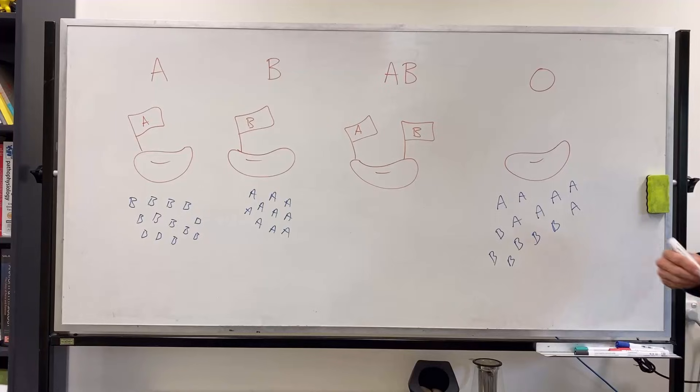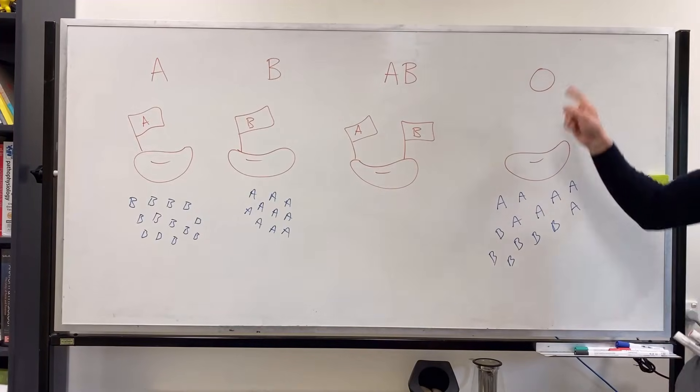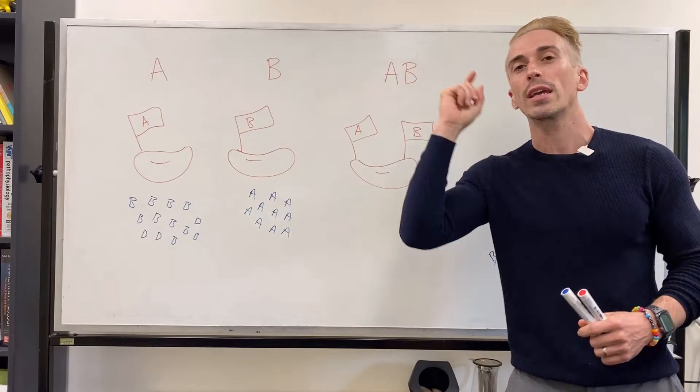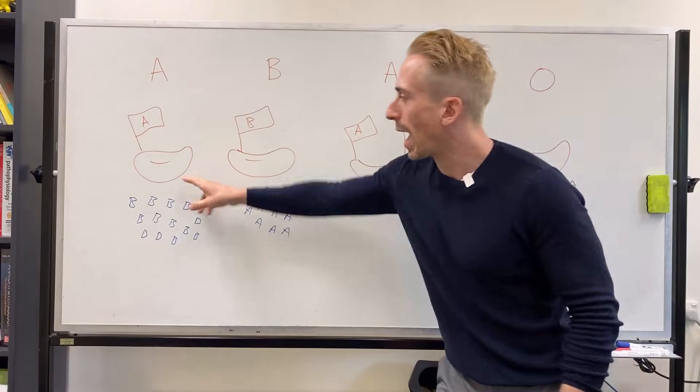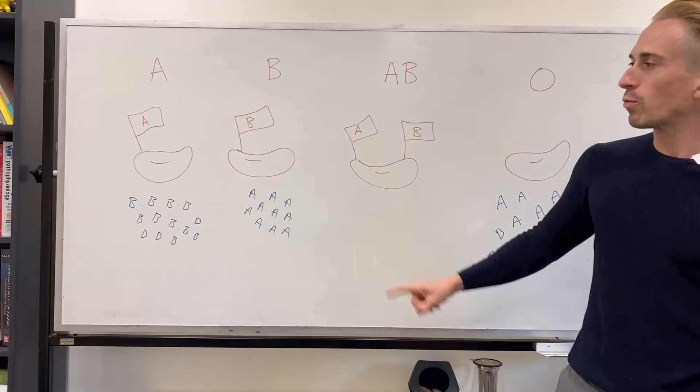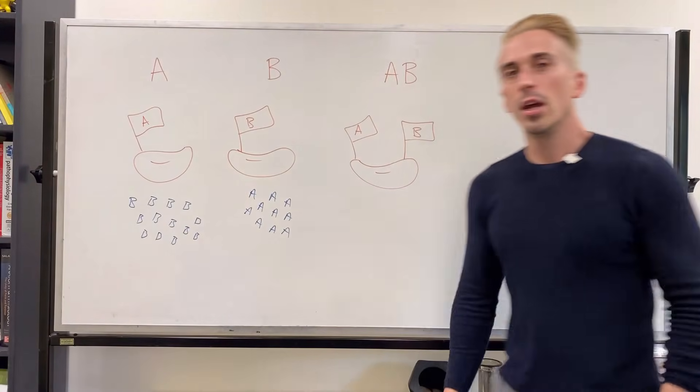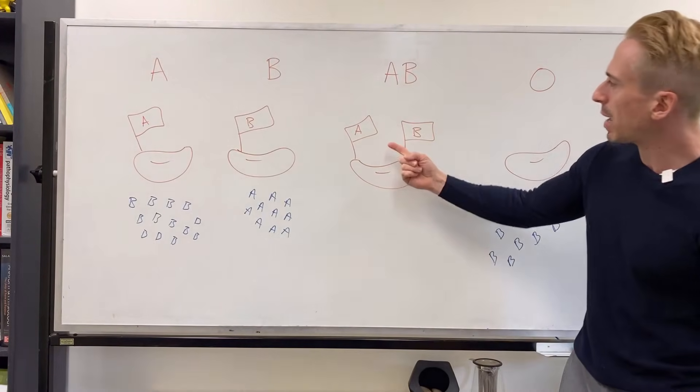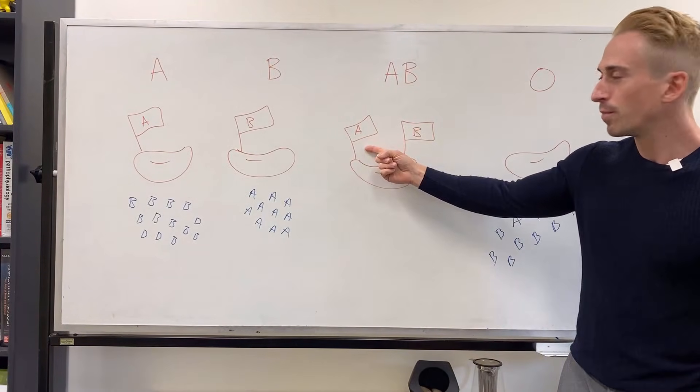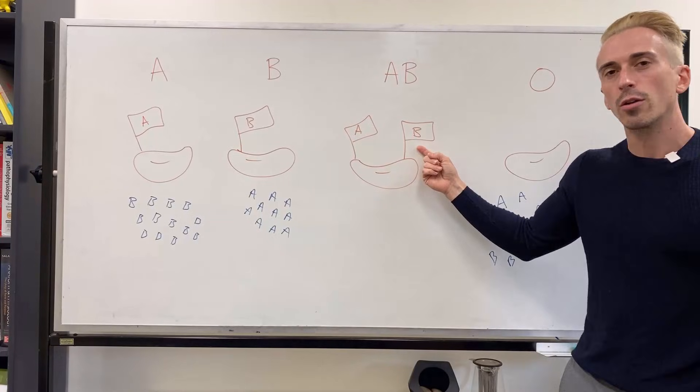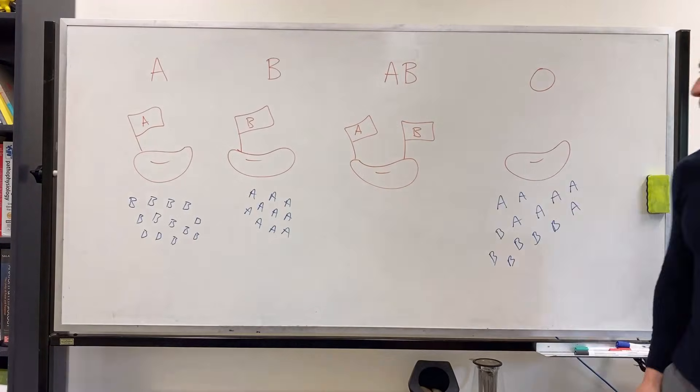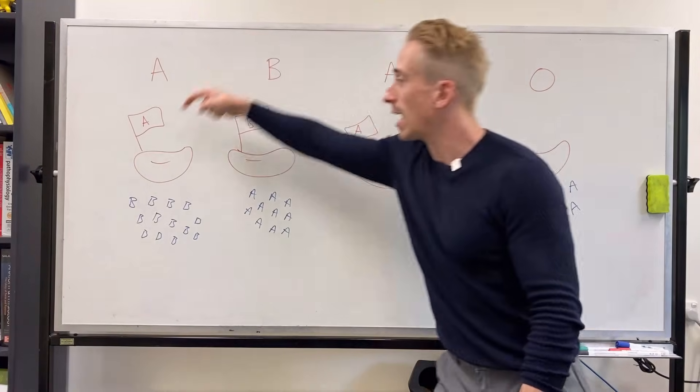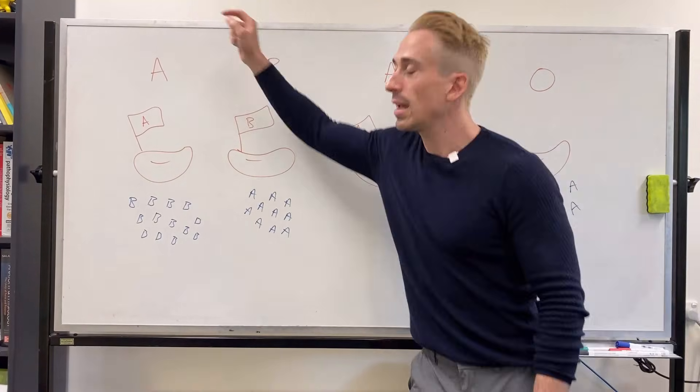Now what this means is this: we can now look at any particular blood group and see who they can receive blood from and who they cannot. So if you're blood group A, you cannot receive any B blood. So you can't receive blood from B, you cannot receive blood from AB. You may think, but they've got the A flag. Sure, but they've also got the B flag and they're going to attack that. However, there's no flag on O, so O can be given to A. So A can be given to A and O.